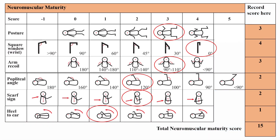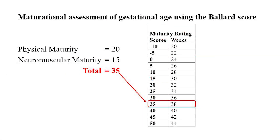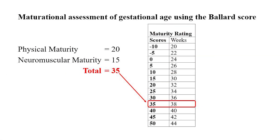Upon completion of the examination, the neuromuscular maturity Ballard score should then be plotted. We then calculate the maturational assessment, which carries a total score of 35. Using the Ballard score, a total of 35 corresponds to a gestational age of 38 weeks.